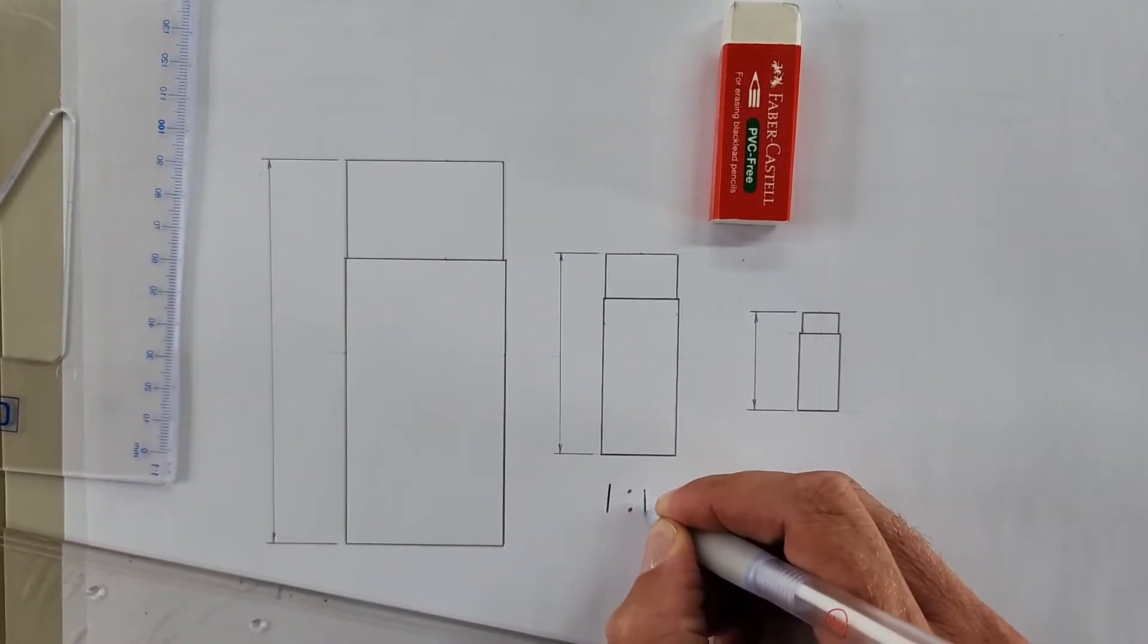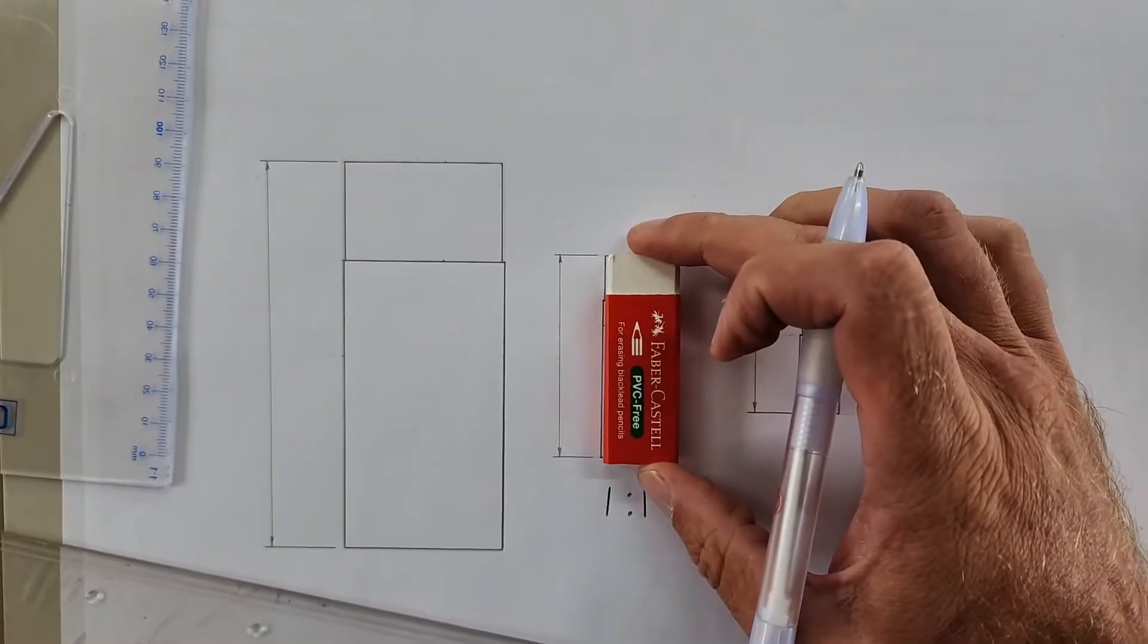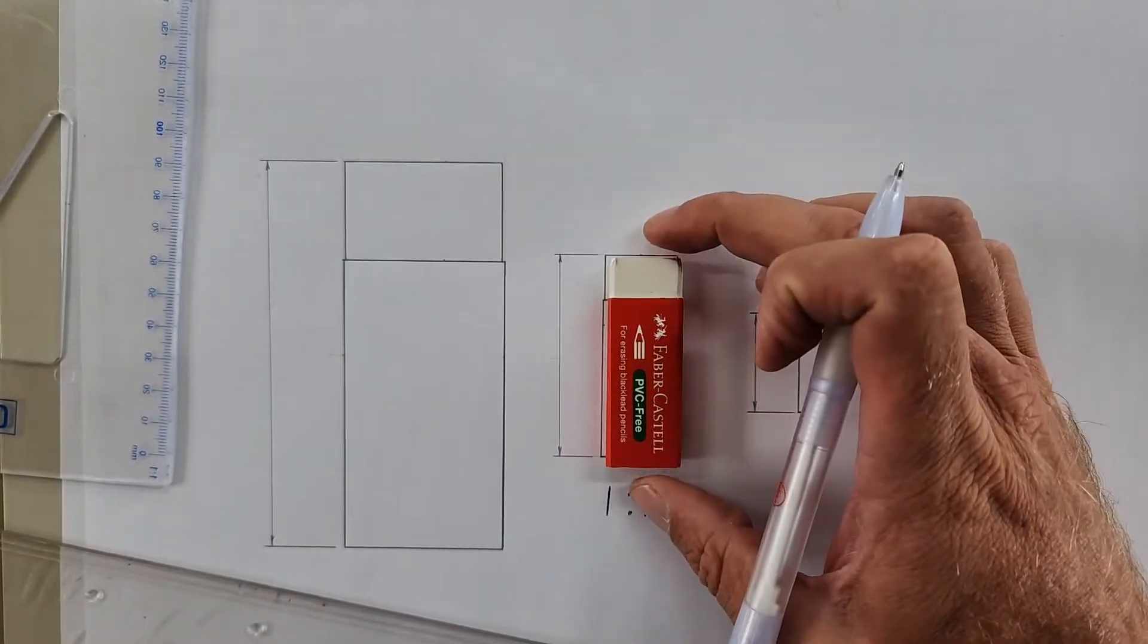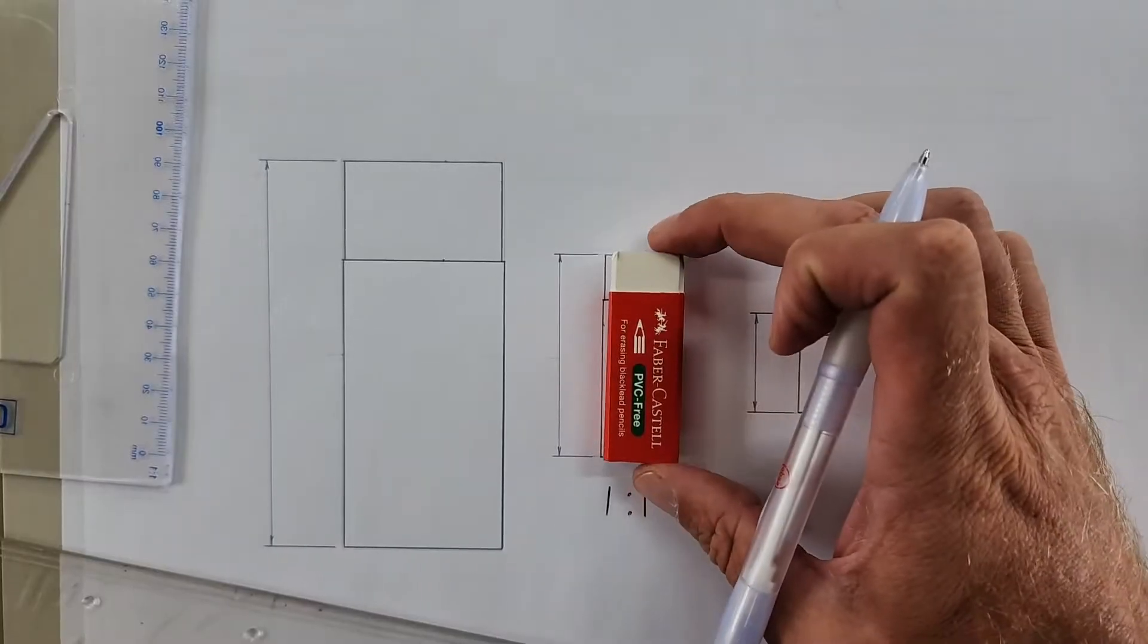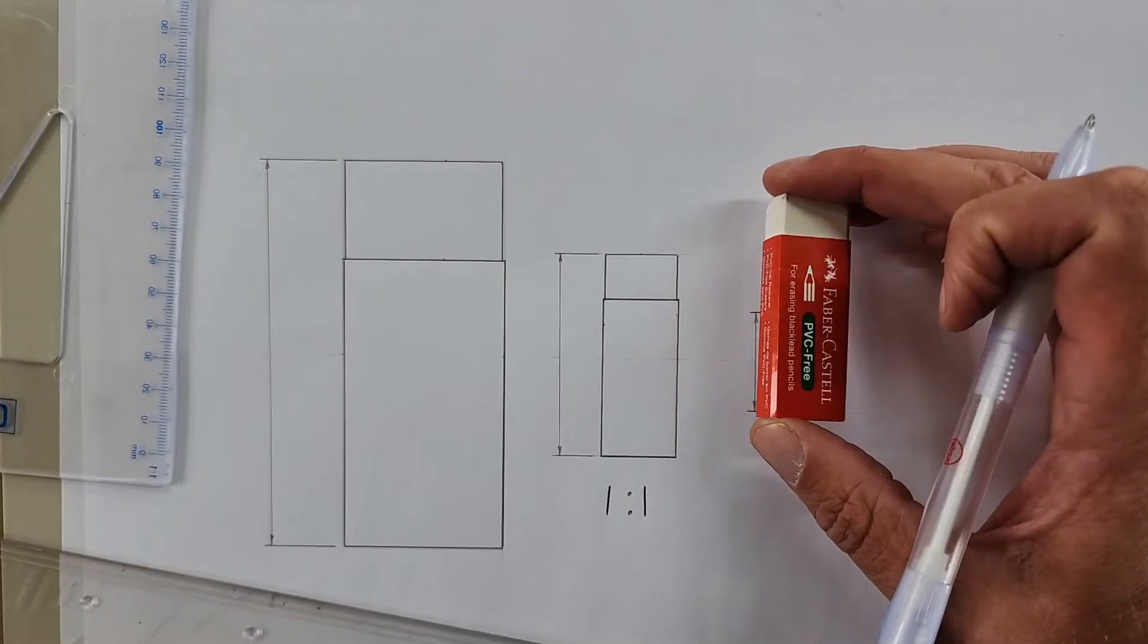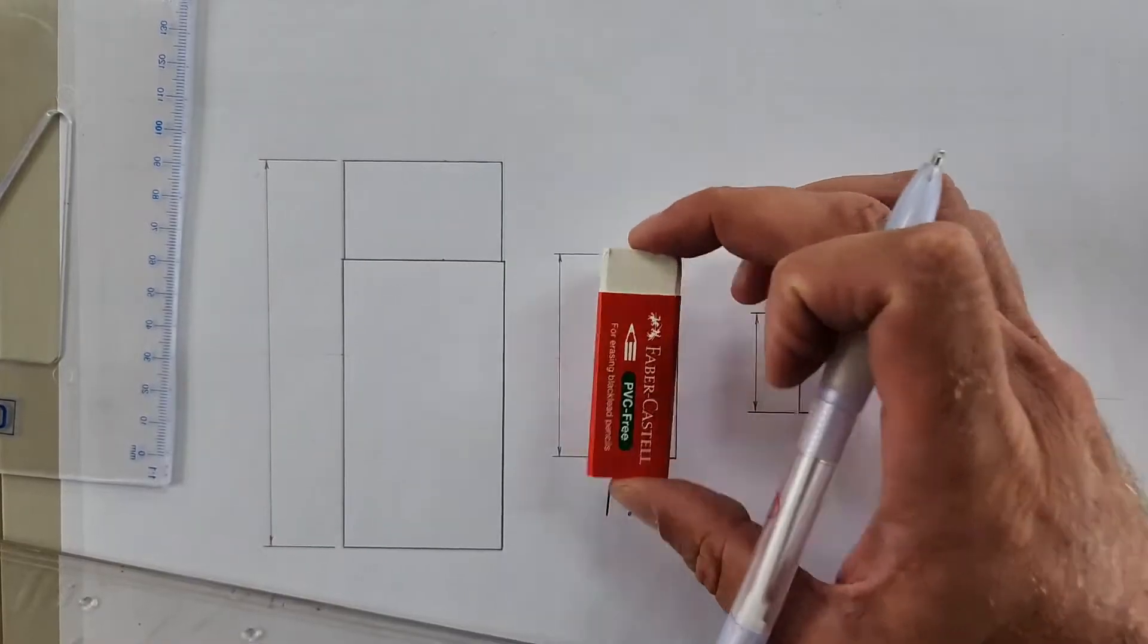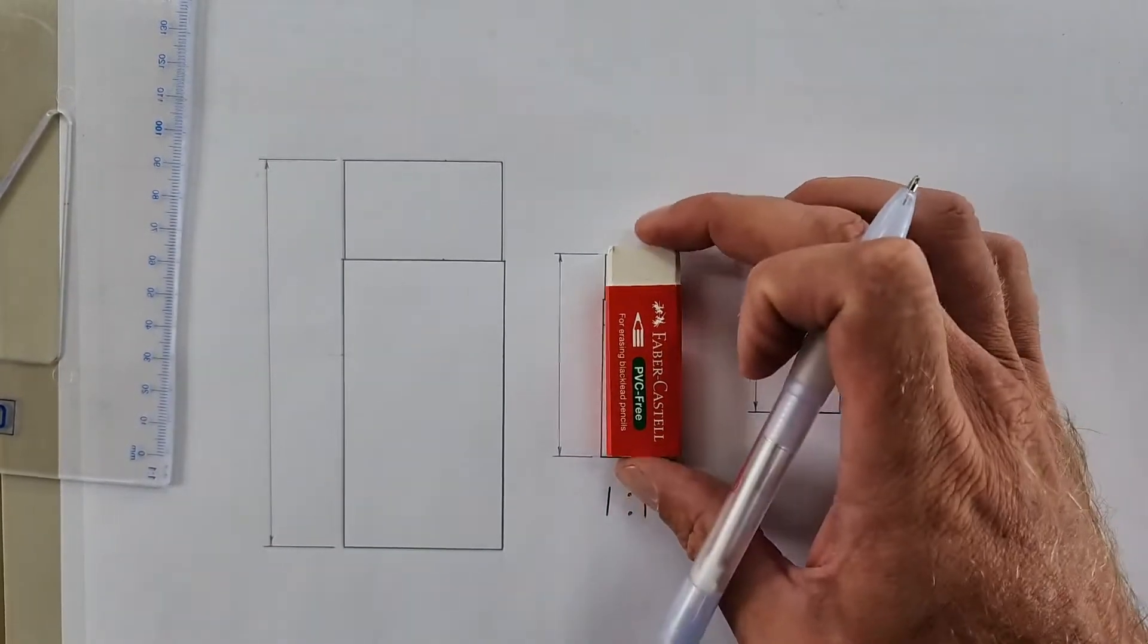What does that mean? I've drawn this drawing here scale 1 to 1, it's exactly the size of my eraser. What is 1 to 1 mean? Same size, 1 to 1. What you see here is what you get, exactly the same.